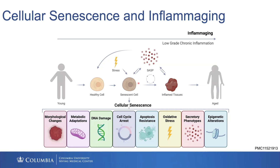We're learning more and more about senescent cells. There's a lot of features they can take on, whether it's morphological changes, changes in metabolism, DNA damage, cell cycle arrest, resistance to apoptosis, the secretory phenotype, and even epigenetic alterations as well.